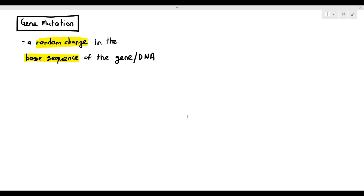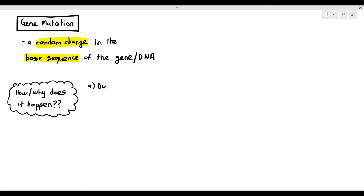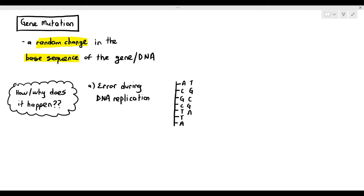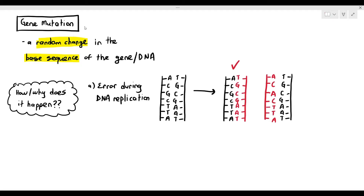One way in which mutations may occur is due to errors during DNA replication. DNA replication happens during the S phase of the cell cycle, and the DNA is replicated to form two new DNA molecules, which have to be identical. One DNA molecule synthesized is exactly identical to the template, but if you look at the second DNA molecule where the highlighted part is, an error has occurred. The template strand has guanine pairing with cytosine, but in the new DNA molecule, adenine mistakenly pairs with cytosine. The chance of this happening is quite rare.